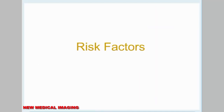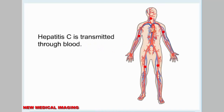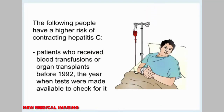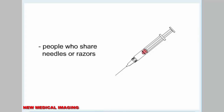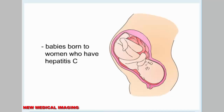Risk Factors. Hepatitis C is transmitted through blood. The following people have a higher risk of contracting hepatitis C: patients who received blood transfusions or organ transplants before 1992, the year when tests were made available to check for it; people who have more than one sexual partner; people who share needles or razors; and babies born to women who have hepatitis C.